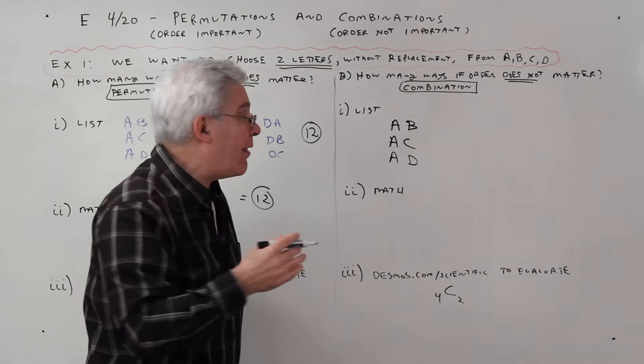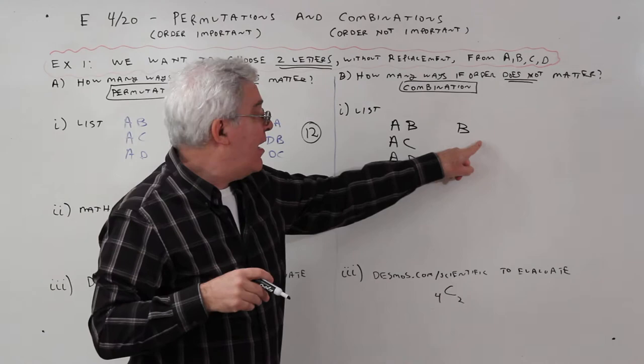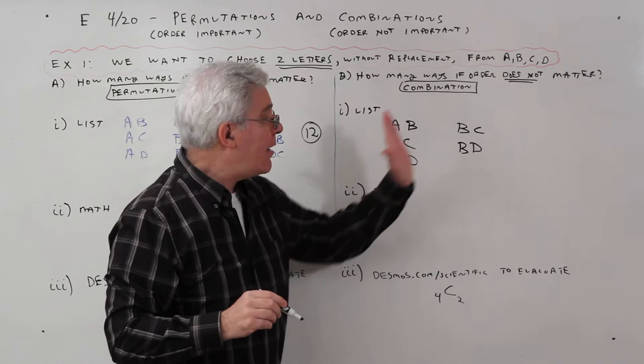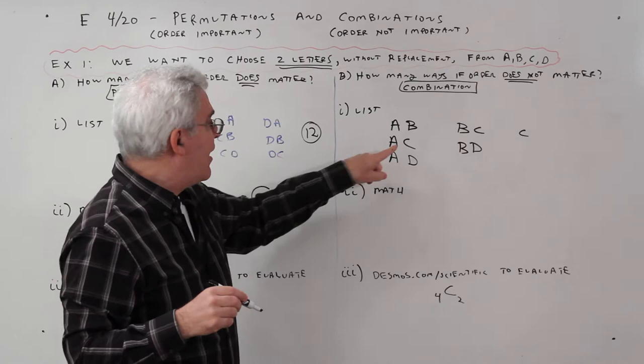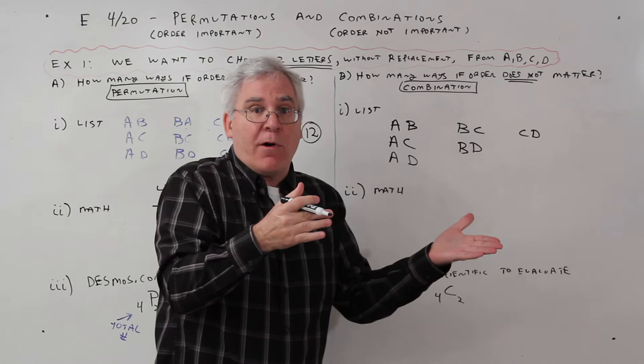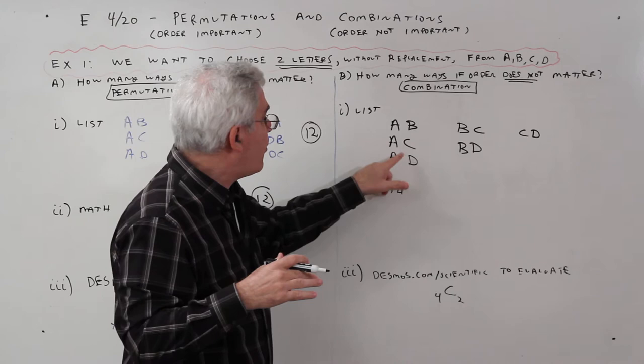Now, let's start with the letter B. But let's not go B, A, because I essentially have that. Let's pay it forward and go B, C. B, pay it forward, D. Next, let's start with the letter C. Don't go C, A. I've got that. Don't go C, B. I've got that. Pay it forward to C, D. And then D doesn't have anybody to pay it forward. D would be like D, A. I've already got all that stuff. So, I've got 1, 2, 3, 4, 5, 6.